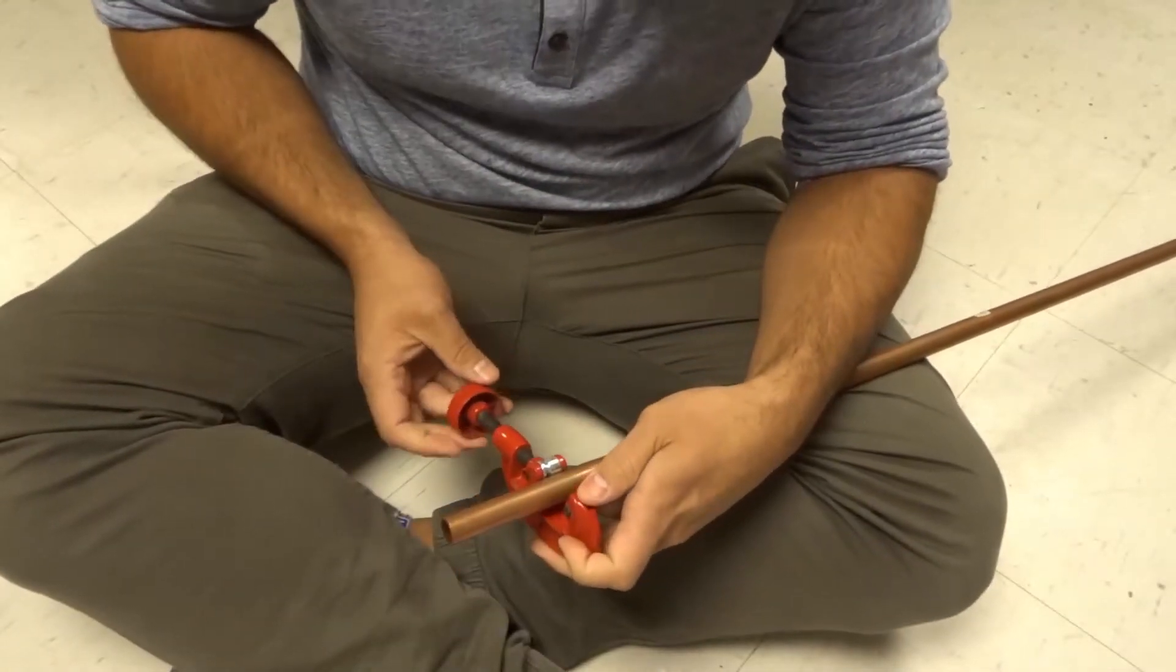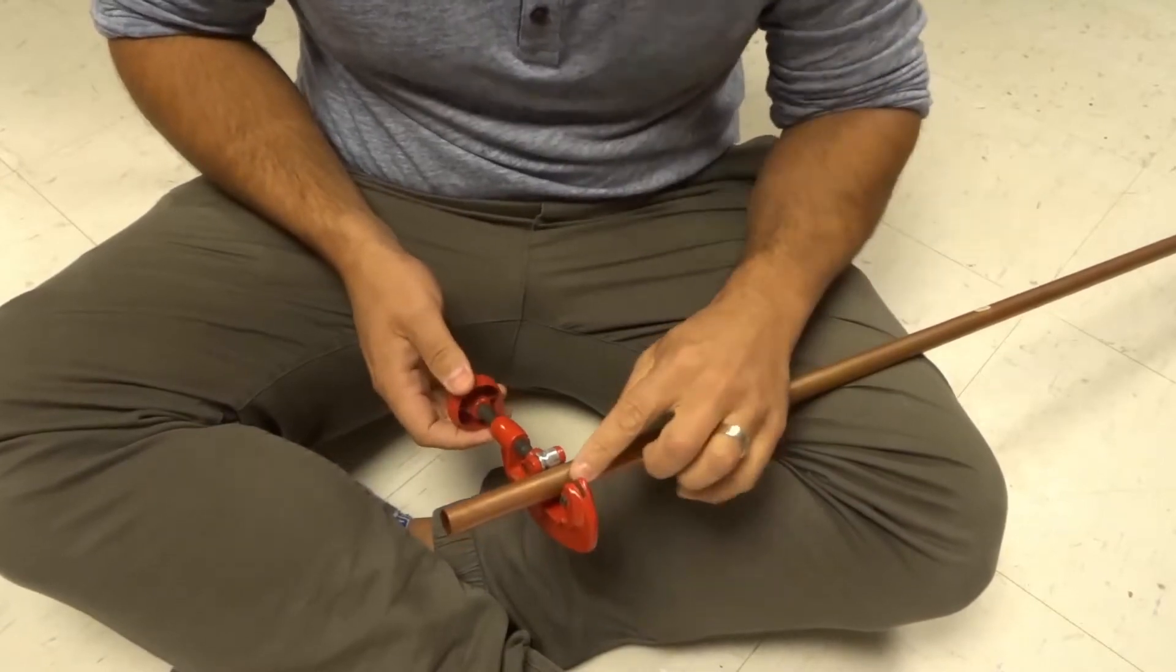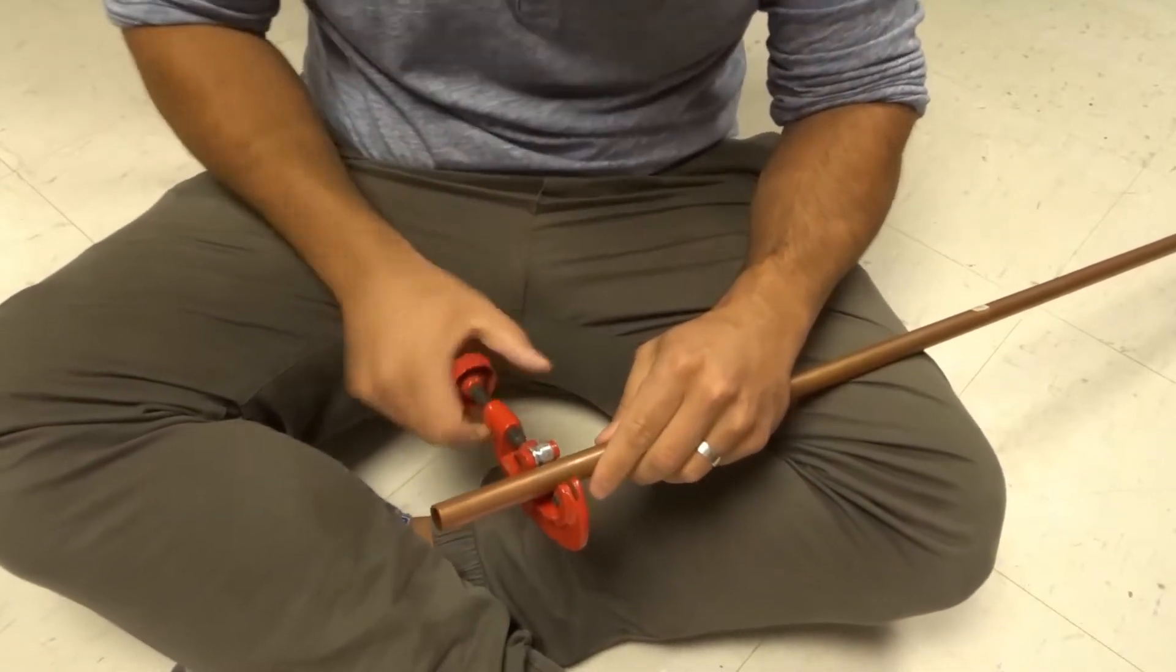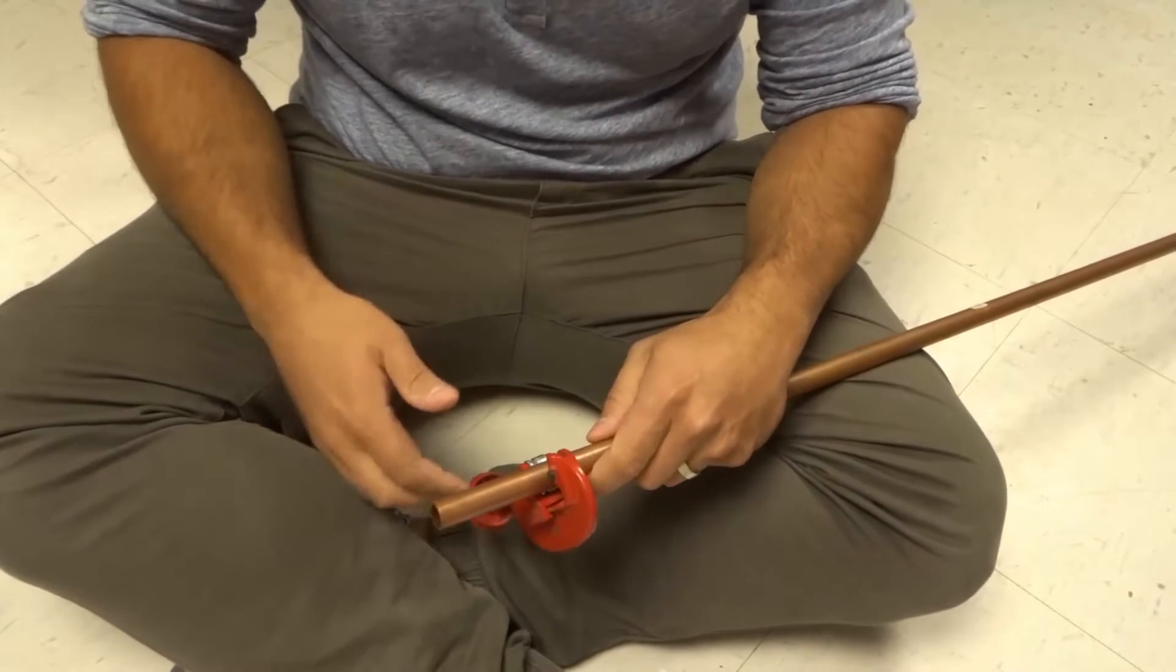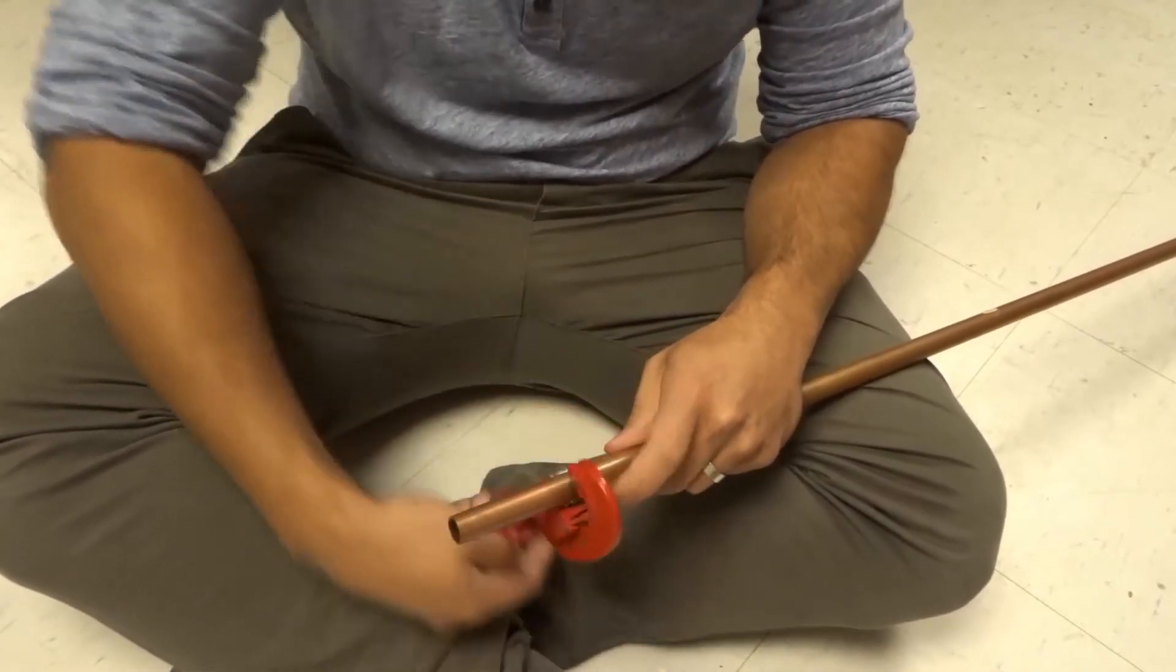So let's say I wanted to cut the pipe right here, I'm going to tighten it so that the blade is touching. It's not tight, the blade is just touching the pipe. You're going to rotate it around a couple times.